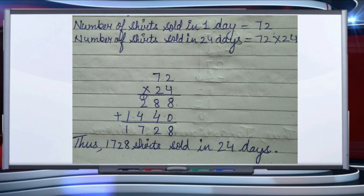We write the multiplicand and multiplier in their places, then start the multiplication: 4 × 2 = 8, 4 × 7 = 28. Then 2 × 2 = 4, 2 × 7 = 14. Adding: 8, 8+4=12 carry 1, 2+1+1=4, 4+1=5. Wait — the answer is 1728 shirts sold in 24 days.